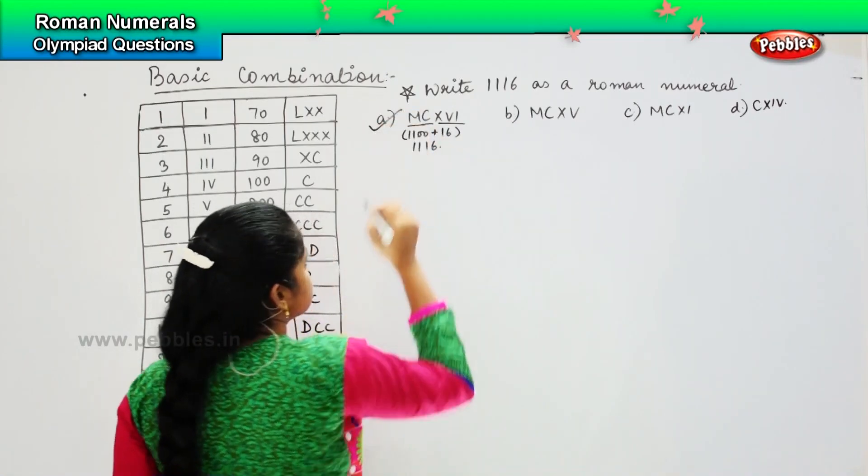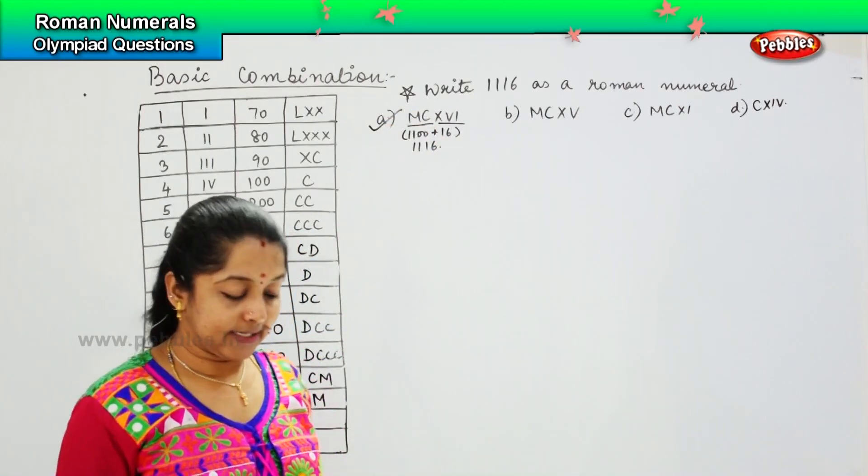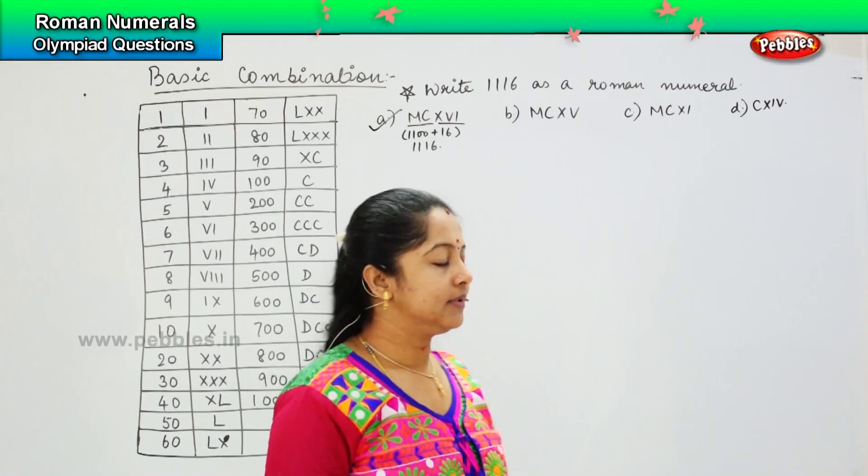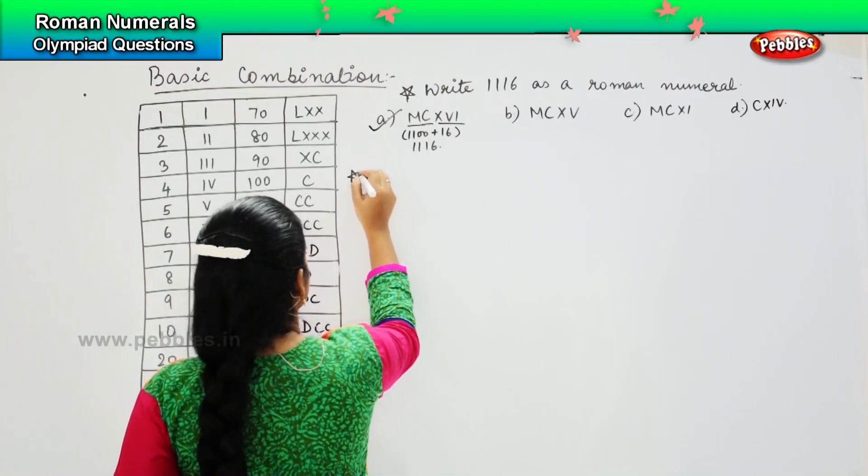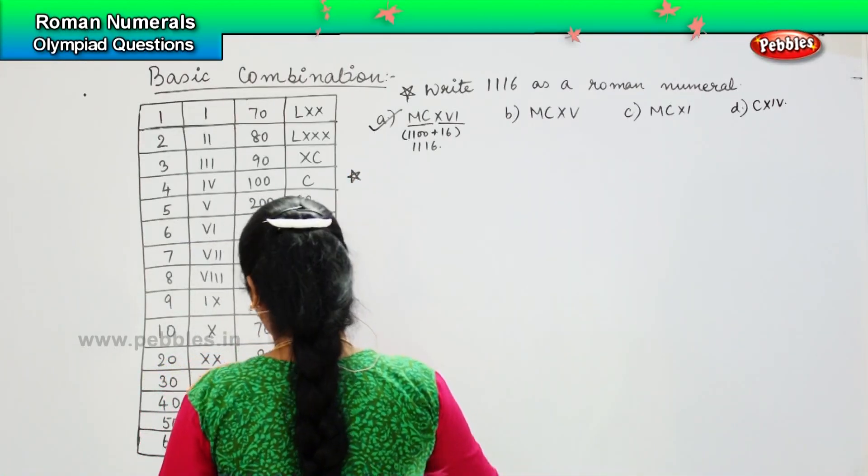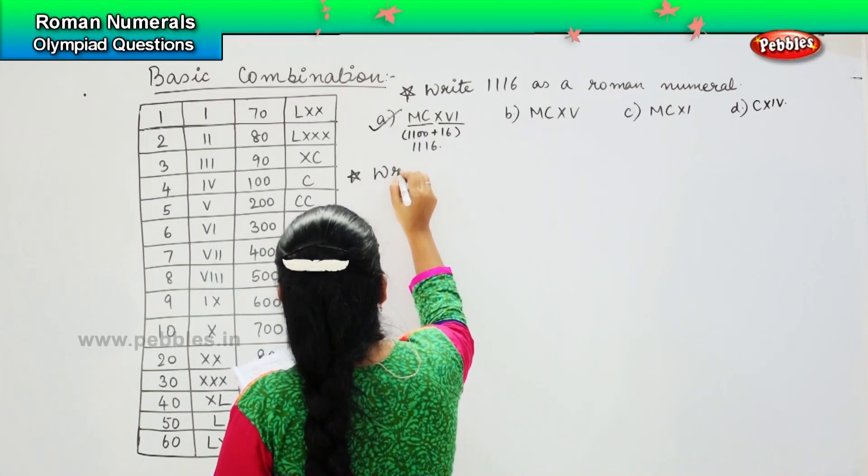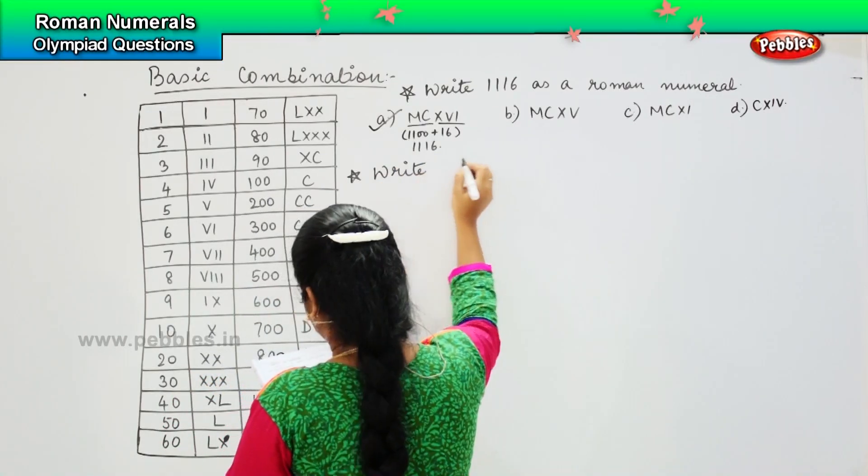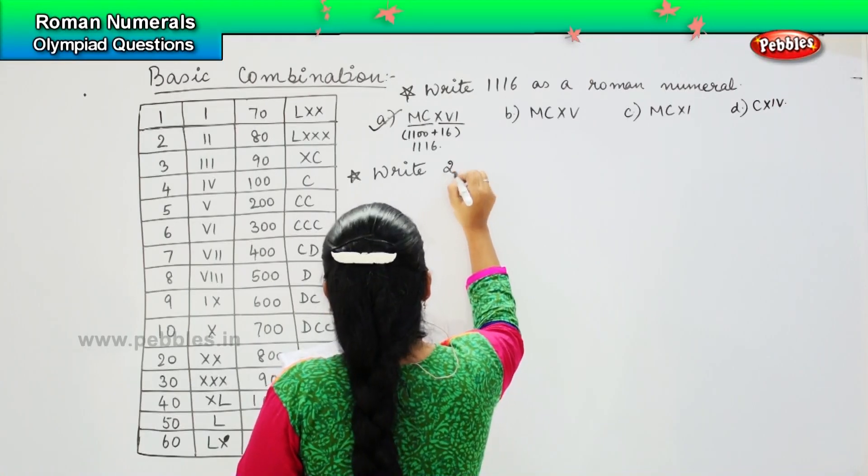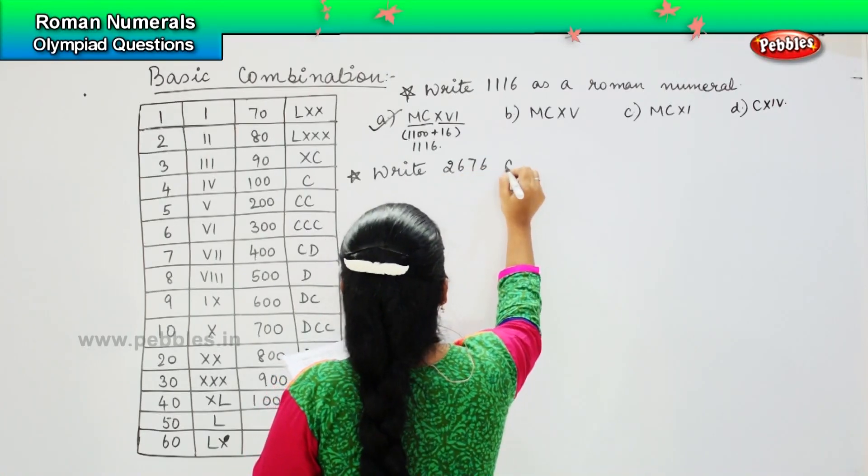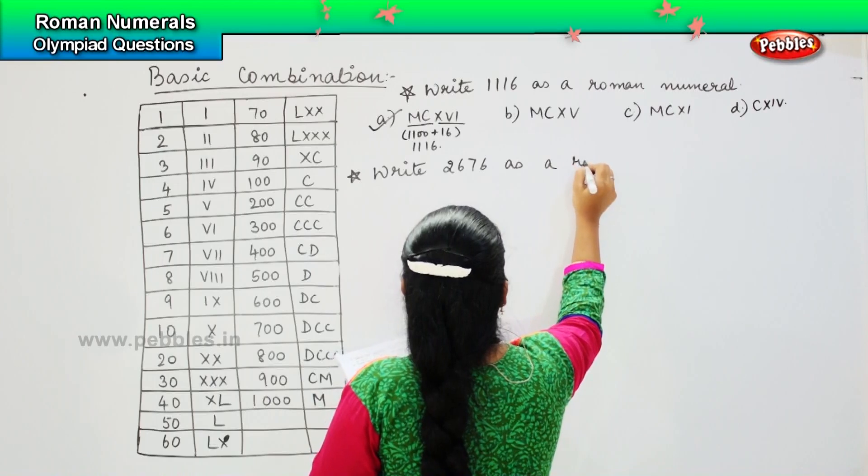Which means option A is the right one. Clear? Shall we move to the next one? Okay, so this is your next question: write 2676 as a Roman numeral.